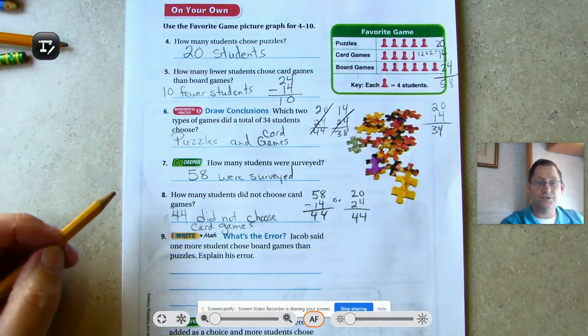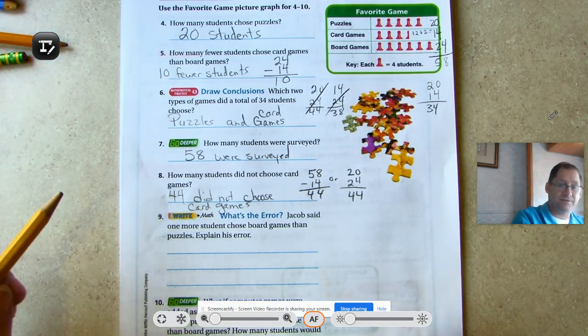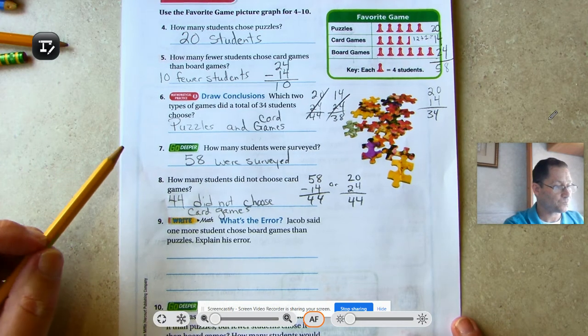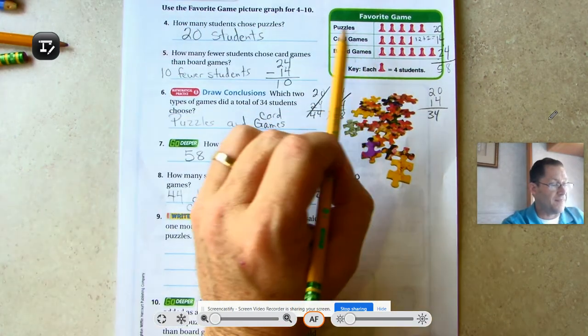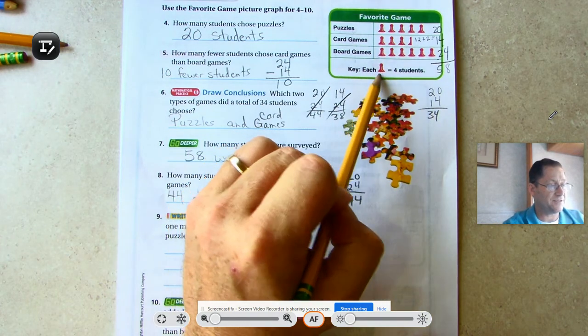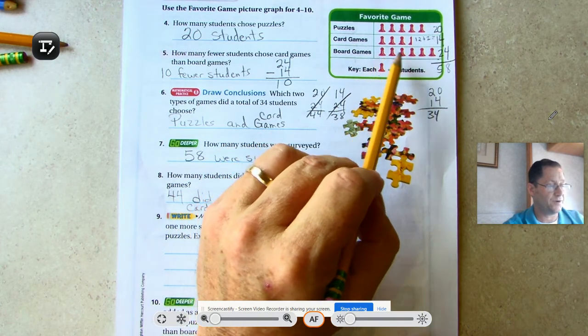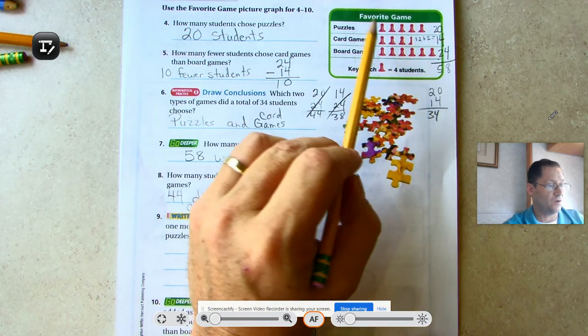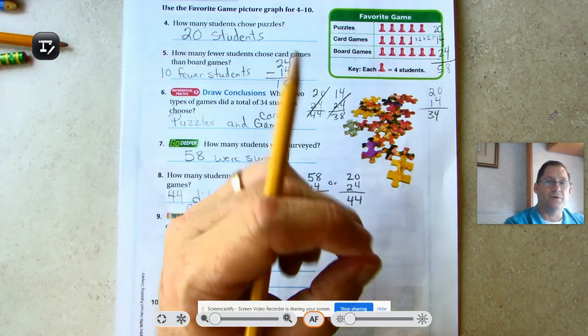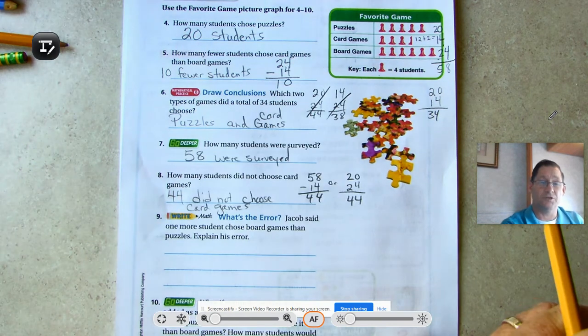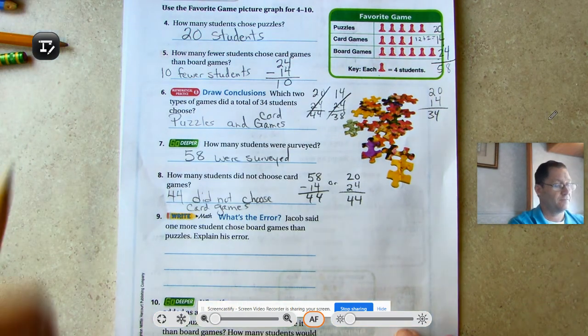Jacob said one more student chose board games than puzzles. That would be true if each of the game symbols was one student. Because he went 1, 2, 3, 4, 5, 6, and 1, 2, 3, 4, 5. That would be one more. But that's one more symbol, which means four students.